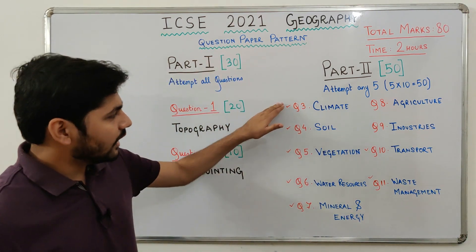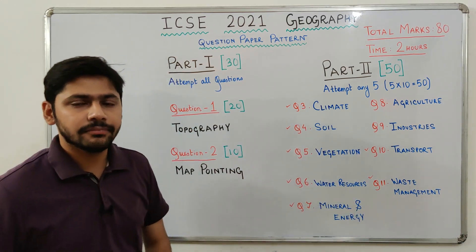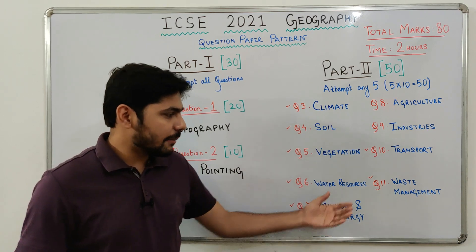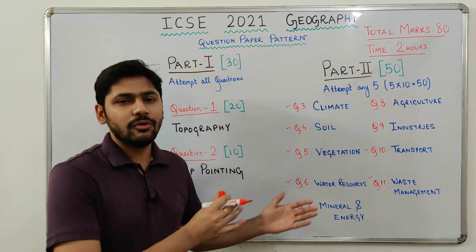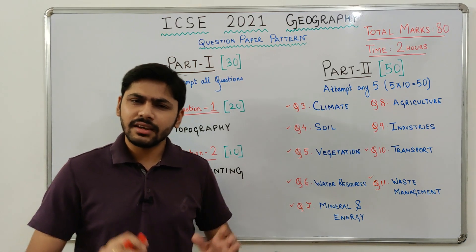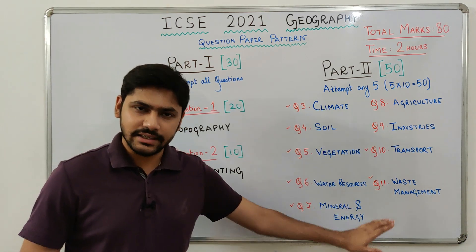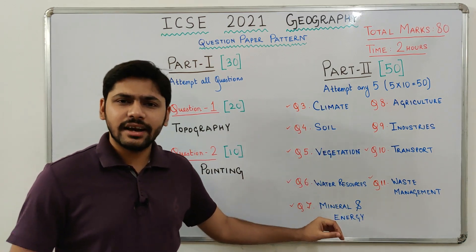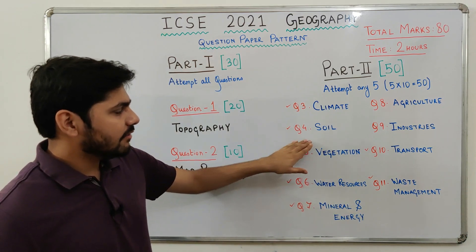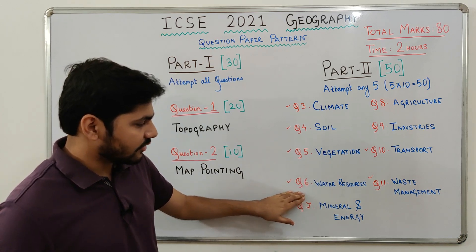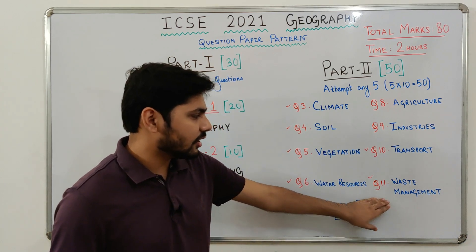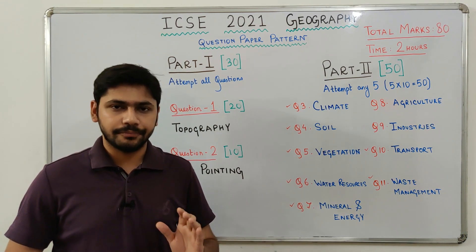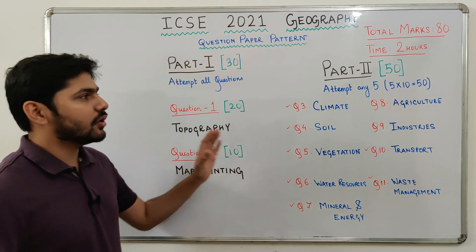I selected 7 questions rather than just 5 because if you only study 5 chapters and face difficulties, you will lose marks. With 2 extra chapters, if you miss a question you can skip it and move on. It is best to prepare for at least 2 extra questions to avoid problems during the examination. We have already covered all these chapters — climate of India, soil, natural vegetation, water resources, mineral and energy resources, transport, and waste management. All links will be in the description box below.